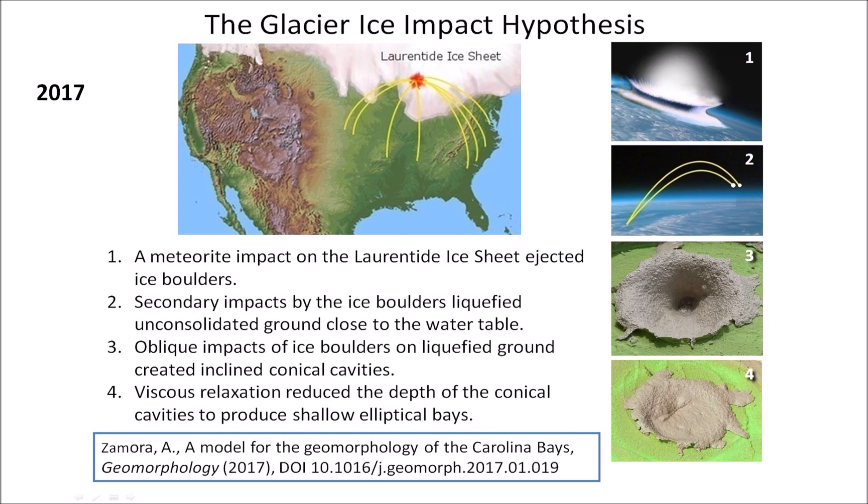The hypothesis posits that an extraterrestrial impact by a comet on the Laurentide Ice Sheet ejected pieces of glacier ice in ballistic trajectories, and the secondary impacts of the ice boulders liquefied the ground and created inclined conical cavities that transformed into shallow elliptical basins after viscous relaxation.